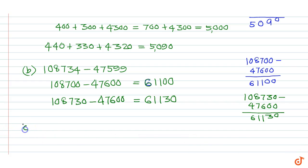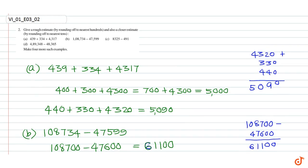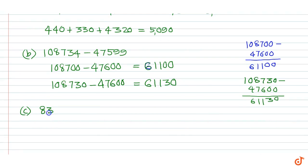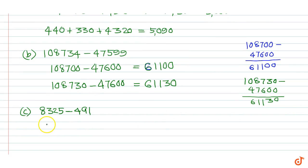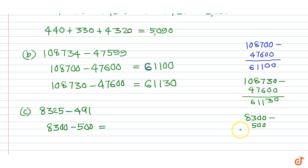Part C: 8325 minus 491. By rounding off to nearest hundred we get 8300 minus 500, which is equal to 8300 minus 500, giving us 7800.